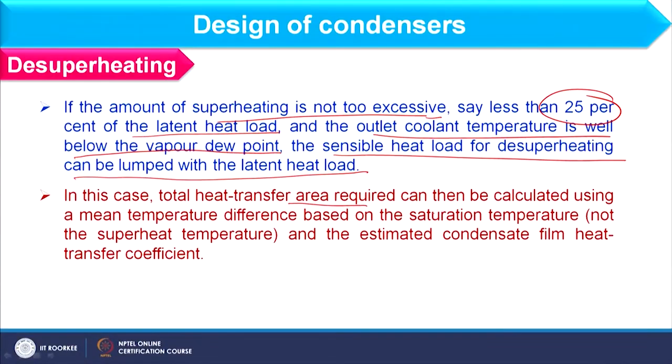If the amount of superheating is not excessive — less than 25% of the latent heat load in the condenser — and the outlet coolant temperature is well below the vapor dew point, the sensible heat load for desuperheating can be lumped with the latent heat load. In this case, the required heat transfer area is calculated using mean temperature difference based on saturation temperature, the total heat load includes both latent heat and desuperheating heat, and the heat transfer coefficient is estimated using the condensation process correlation.